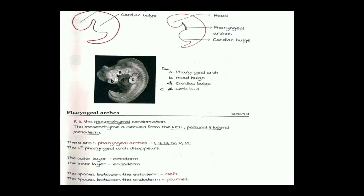The mesenchyme is derived from three structures: the neural crest cells, the paraxial mesoderm, and the lateral mesoderm. Pharyngeal arches are just the condensation of this mesenchyme. There are five pharyngeal arches: one, two, three, four, and six — the fifth arch disappears. So in total we have five arches: one, two, three, four, and the sixth arch.